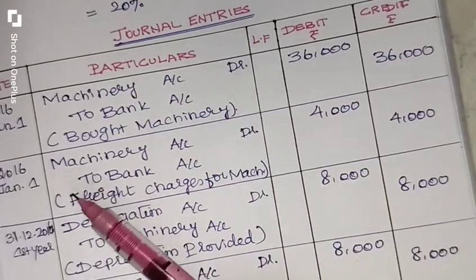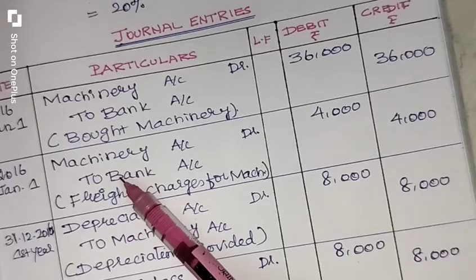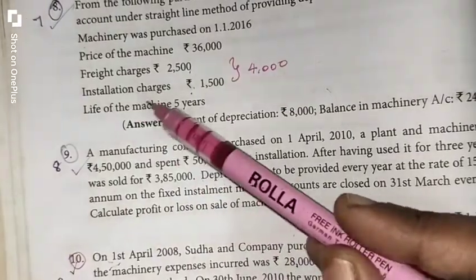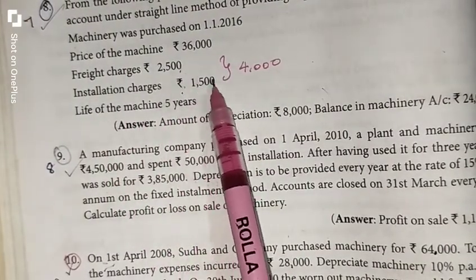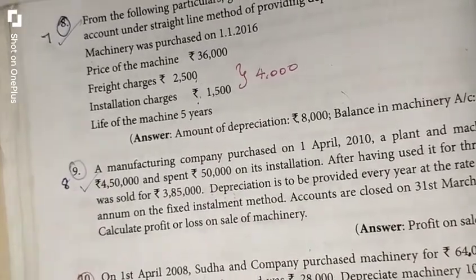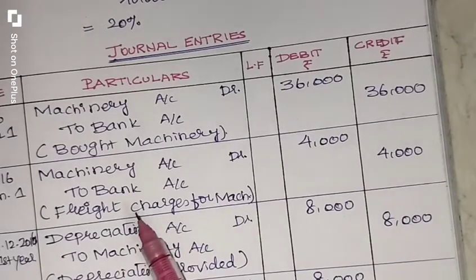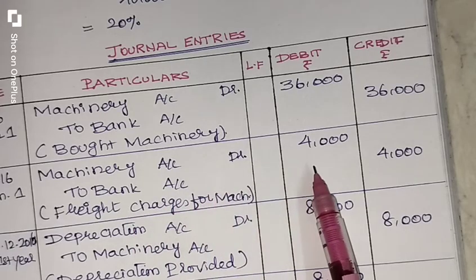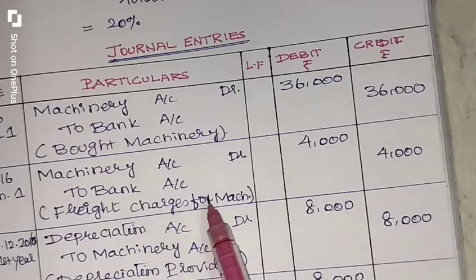Then you spent some money on expenses when you purchased the asset. They are freight charges 2,500 and installation charges 1,500 — both together we get 4,000 rupees. For that 4,000 rupees, you pass the same type of journal entry: Machinery Account Dr. to Bank Account 4,000 rupees. Narration: freight charges and installation charges for machinery.